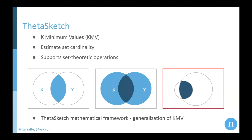With KMV or Theta Sketch, we managed to get that without losing too much accuracy, which was great. The only problem was when we try to intersect a very small set with a very big set — only in this specific scenario the accuracy was not so good and was pretty much unexpected. Itai will show you some mitigation tactics later in this presentation.